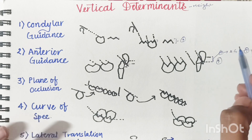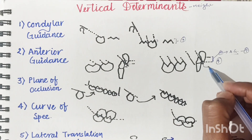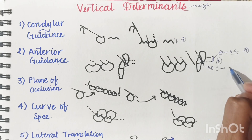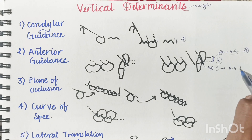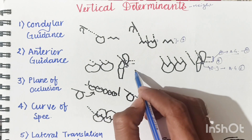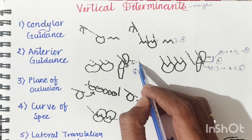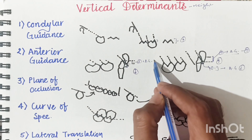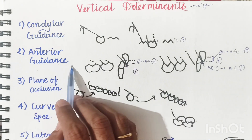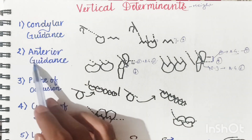Anterior guidance depends on overbite and overjet. As overbite increases, anterior guidance increases, meaning cusps are sharper. As overjet increases, anterior guidance decreases, meaning cusps are shallower. So if anterior guidance is higher the cusp will be sharper, and if anterior guidance is lesser the cusp will be shallower.